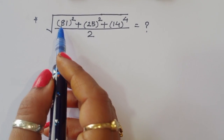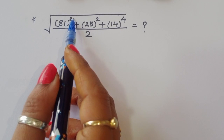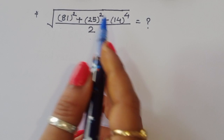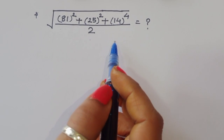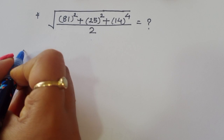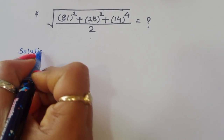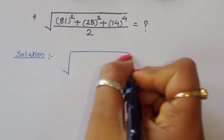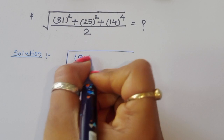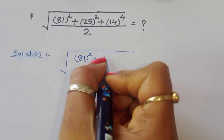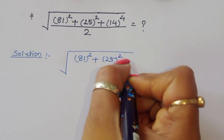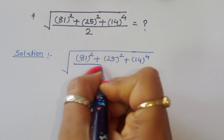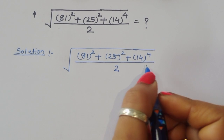The question is: find the value of the square root of (81² + 25² + 14⁴/2). We have to find out the value of this term. Let's see the solution.